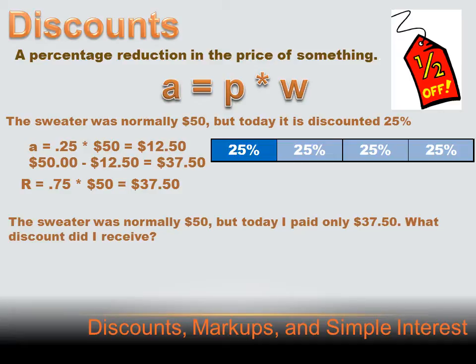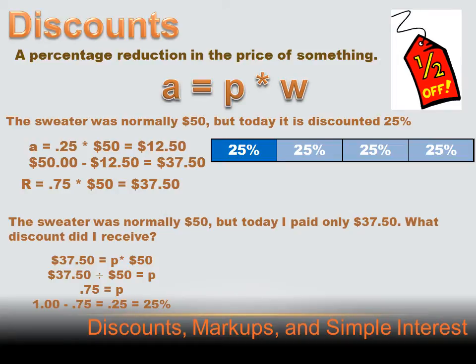Now let's say the problem were turned around: the sweater was normally $50, but today I paid only $37.50 for it. What discount did I receive? Using the percent equation, $37.50, which is the portion, equals the percent times the original price. Dividing both sides by 50, we get $37.50 divided by $50 equals 0.75, or 75%. But 75% is what I ended up paying — not the discount. The discount is 100% minus 75%, which equals 25%.